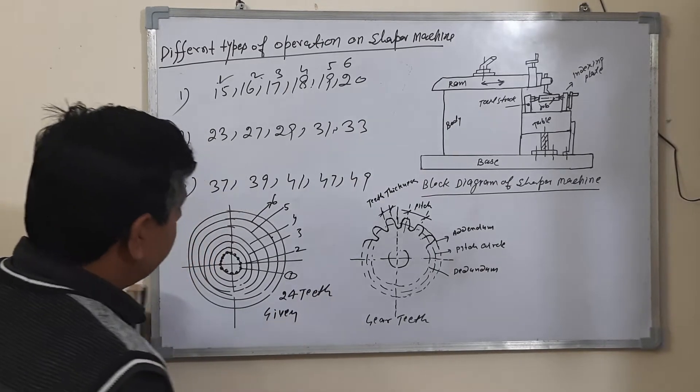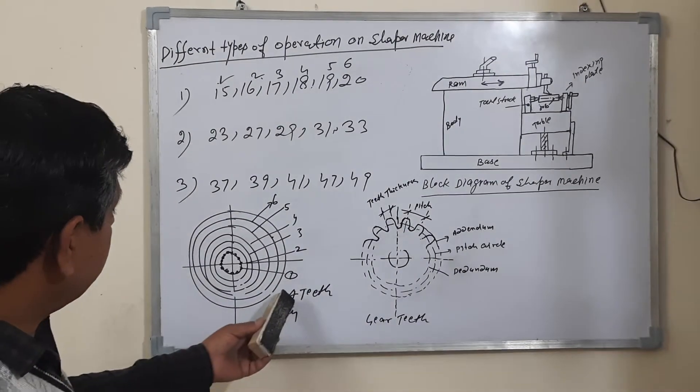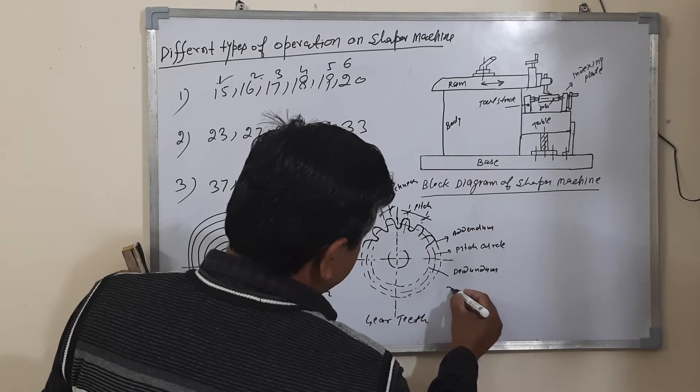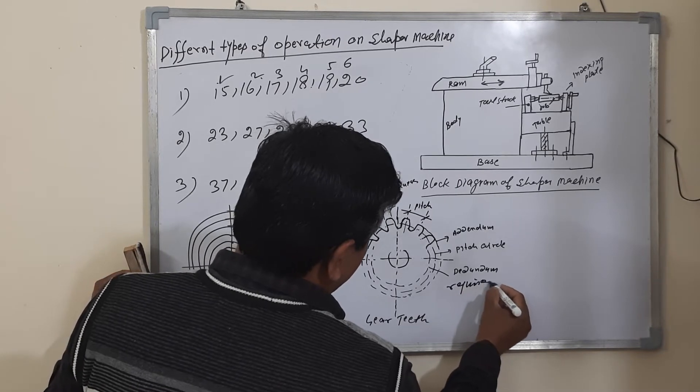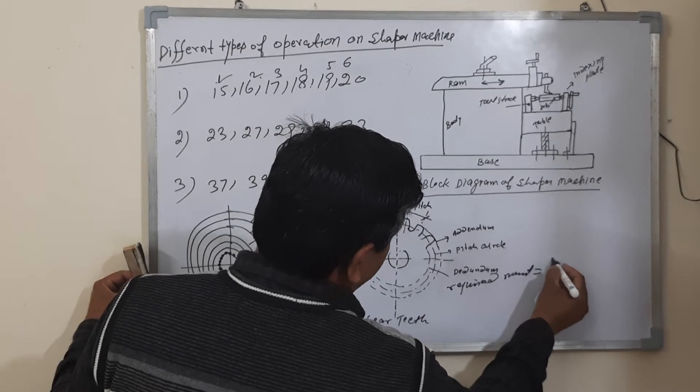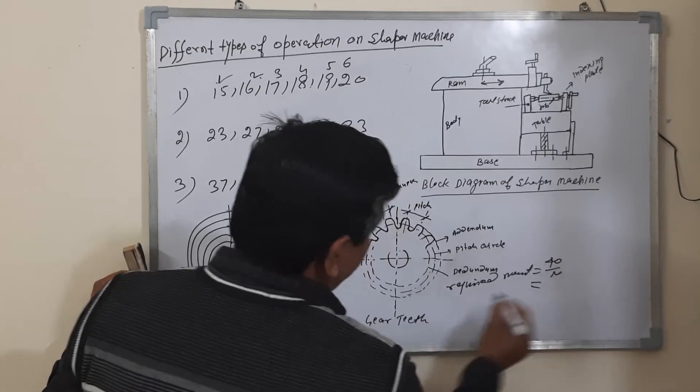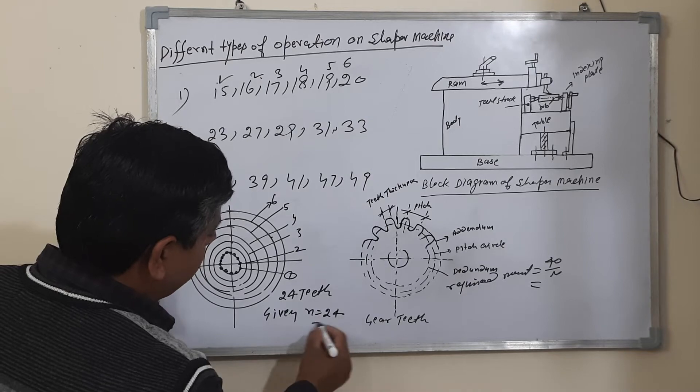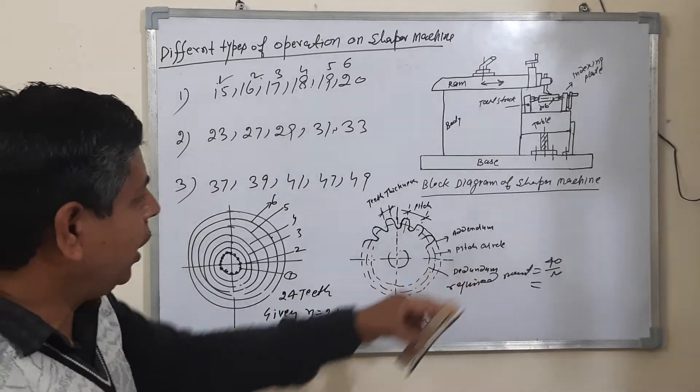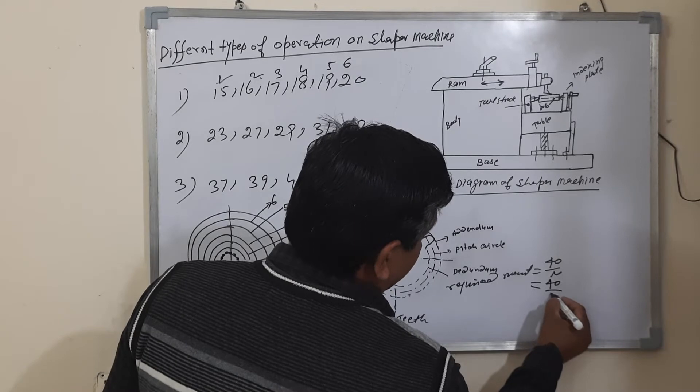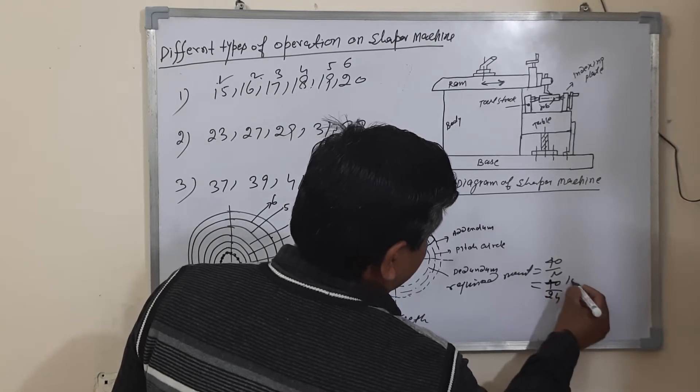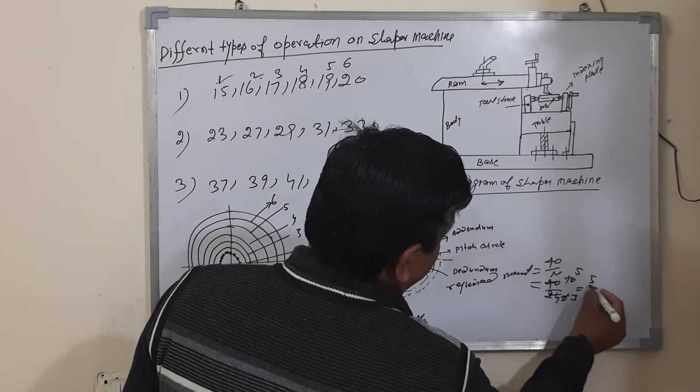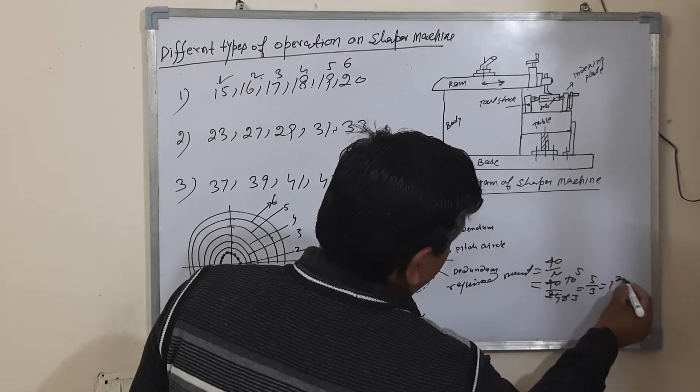To calculate, this formula is used: required movement is equal to 40 upon n. Put the value of n - n is equal to 24. Put the value n here: 40 upon 24, which simplifies to 5 upon 3, which means 1 and 2/3.